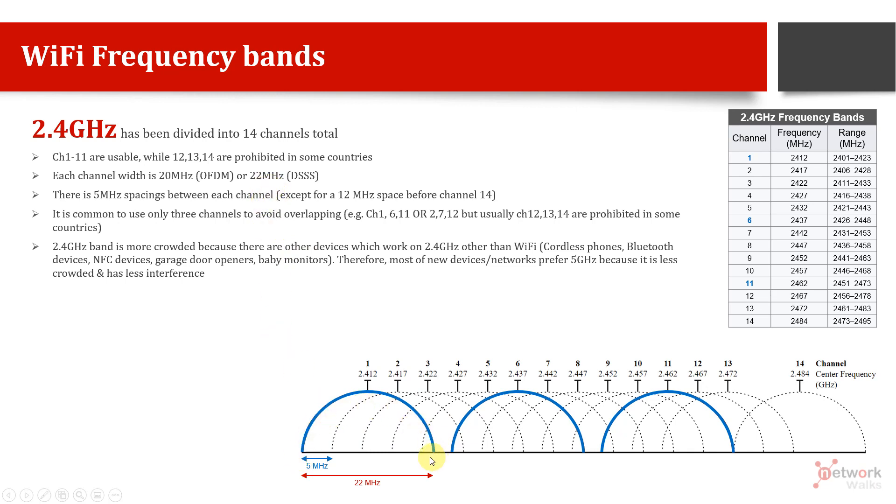So each channel is 20 or 22 megahertz wide and between two adjacent channels, I am talking about channel 1 to 2, we have 5 megahertz. So first channel starts from here, goes until here. And even before the first channel has finished, the second frequency will start. It will be spread along with channel number 1. Even in here in the table, you can see these are all the channels from 1, 2, 3, 4, 5, 6 up to 14. And this is the center frequency. So the first channel starts from 2401 megahertz and it goes up to 2423, which is 22 megahertz. The second channel starts from 2406.